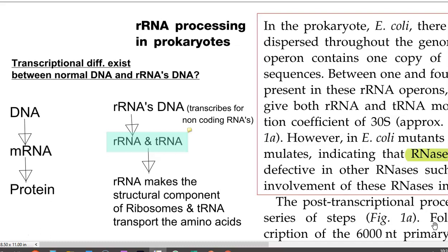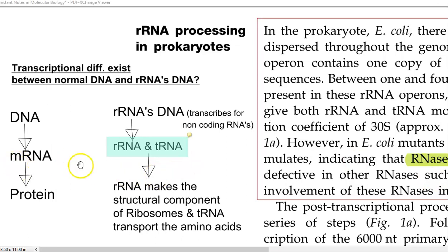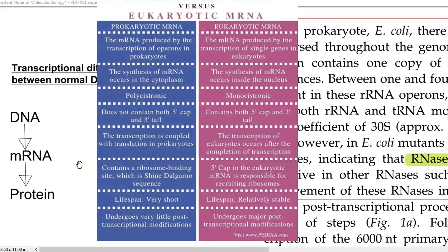Transcriptionally, some differences exist between normal DNA and the DNA of the rRNA molecule. Any kind of molecule in a living organism needs to be coded by genes — whether it is an enzyme, an RNA, or a protein, everything must be coded by a gene. There is a small difference existing between normal DNA and the DNA of the rRNA molecule. In normal DNA, DNA is converted into mRNA, and from mRNA it is converted into protein. The first step is transcription and the second step is translation. In the first step of mRNA formation, some differences exist between prokaryotes and eukaryotes.